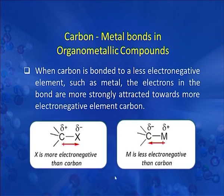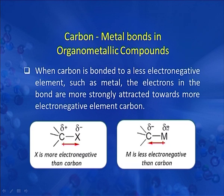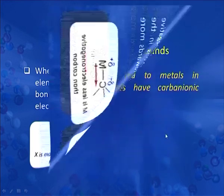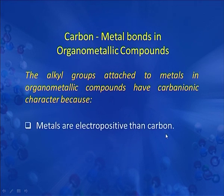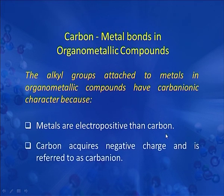When carbon is bonded to a more electronegative element such as halogen, the electrons in the bond are more strongly attracted toward the halogen, making carbon slightly positive. But when carbon is bonded to a less electronegative element such as a metal, the electrons are more strongly attracted toward carbon. The bonded electron pair between carbon and metal shifts more toward carbon, making carbon electronegative relative to the metal. Alkyl groups attached to metals thus have carbanionic character.